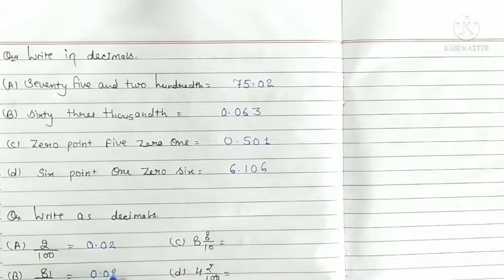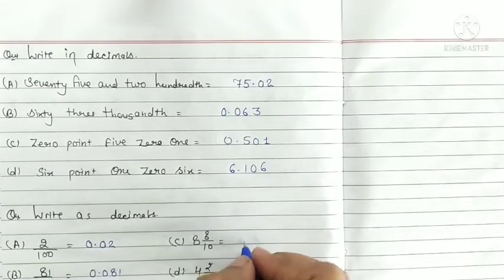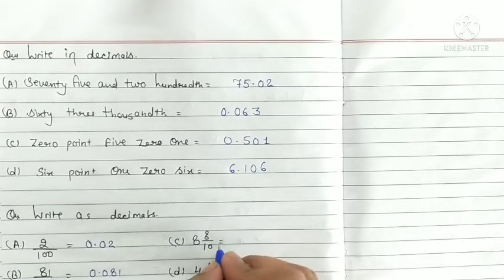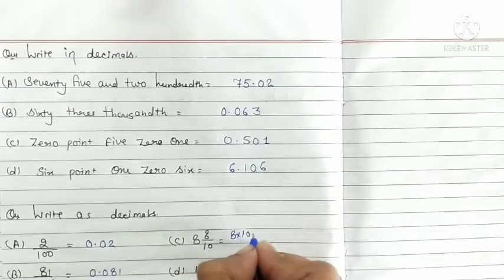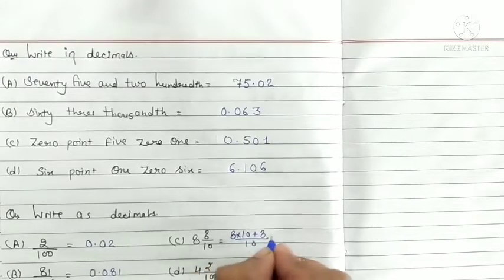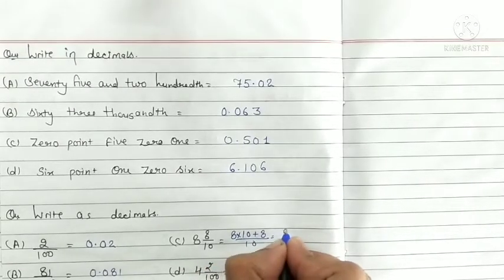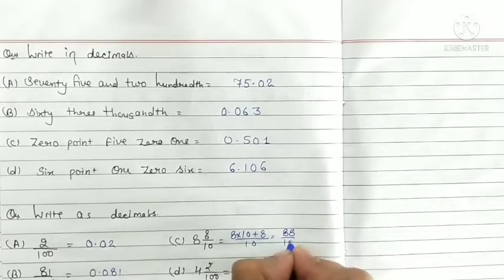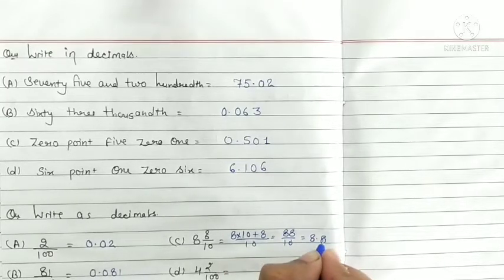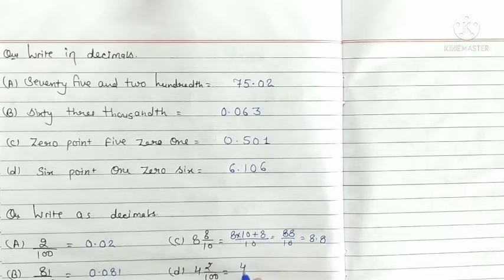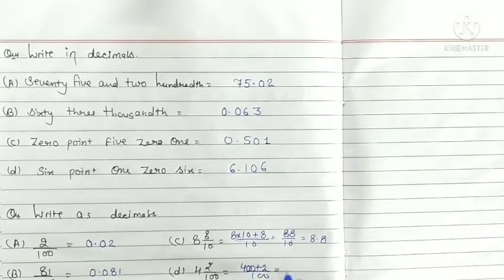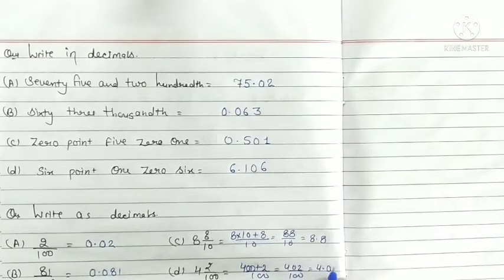Eight, eight upon ten. We will do this like, 8 multiplied 10 plus 8 upon 10. Eight tens 80 plus 8, 88 upon 10, 8.8. Same will happen, 400 plus 2 upon 100, 402 upon 100, 4.02.